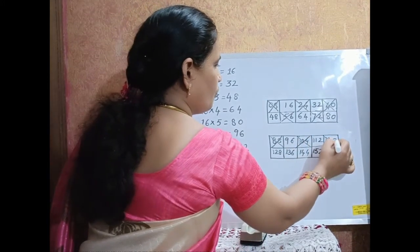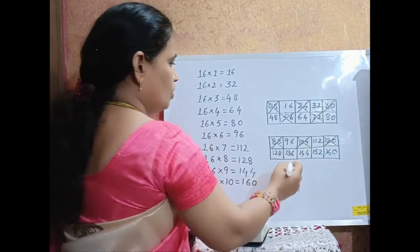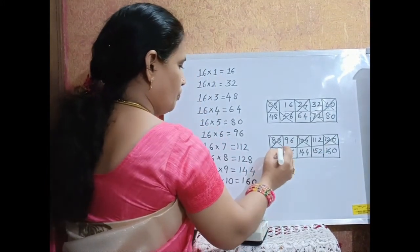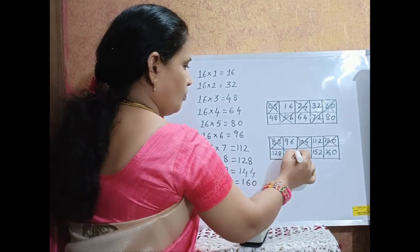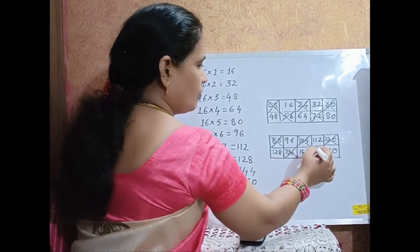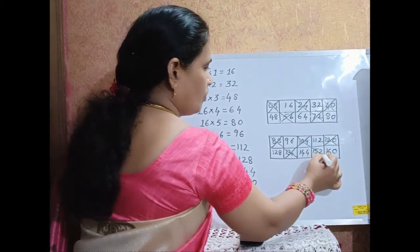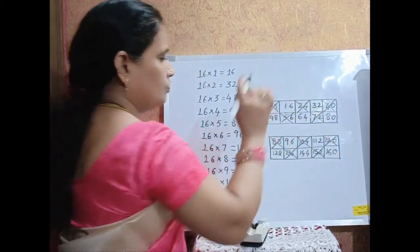The results for the table of 16 include: 16 times 8 is 128, 16 times 9 is 144, 16 times 10 is 160, 16 times 9 is 144, and 16 times 10 is 160, going up to 136 and 152.